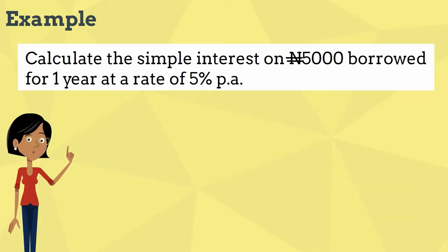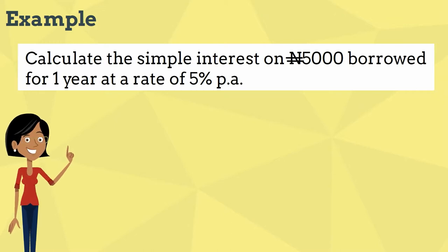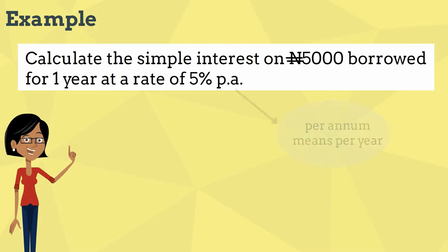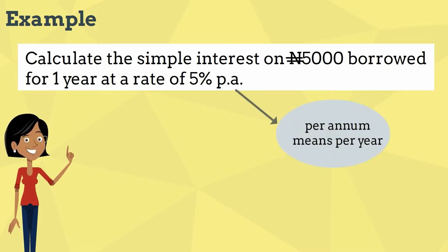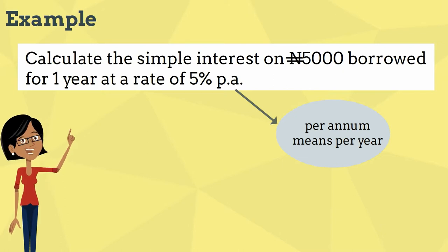In this example, it says: calculate the simple interest on 5,000 Naira borrowed for one year at a rate of 5% per annum. Because it's only for one year, we can use our knowledge of calculating percentage of amounts to calculate the interest.